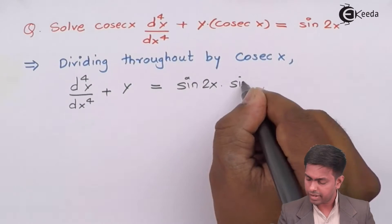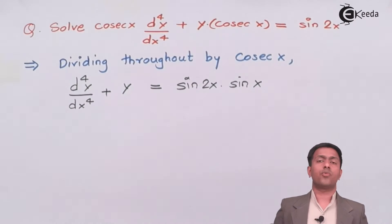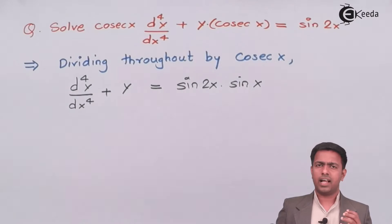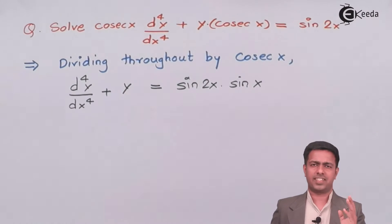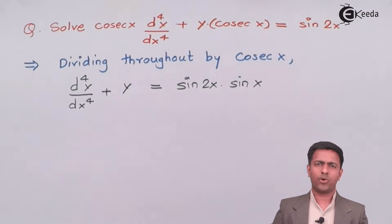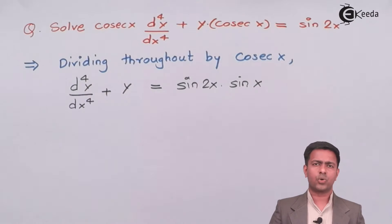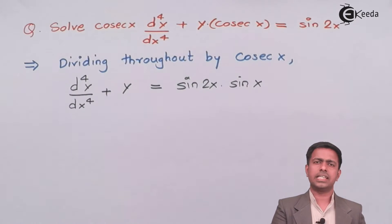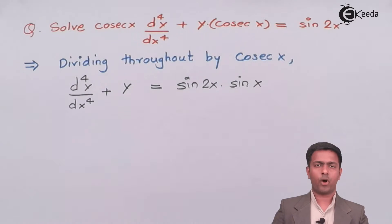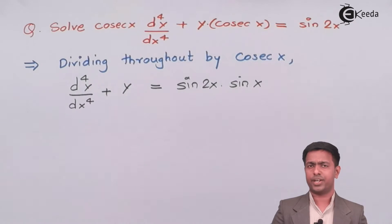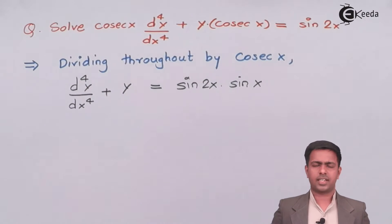Taking cosec x from the denominator to the numerator, the right hand side becomes sine 2x · sine x. We do this because if we want to solve using the operator rule, the right hand side must be sine or cos, which is why we bring cosec x to make it sine x.